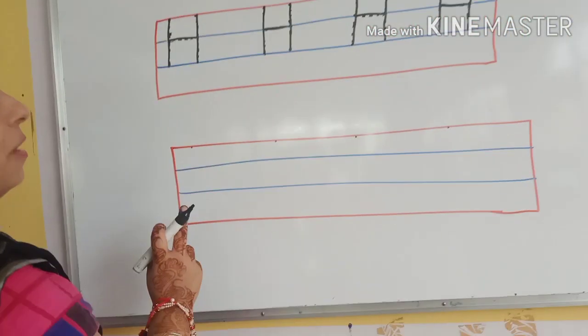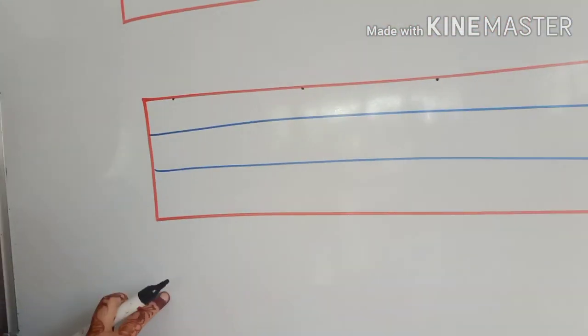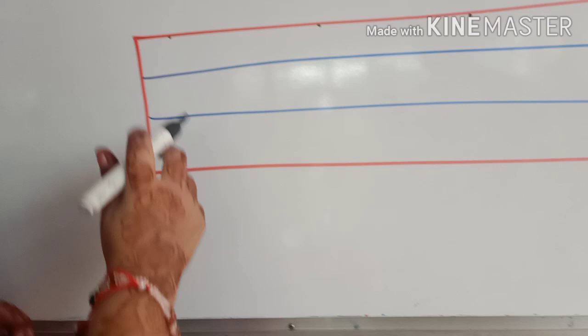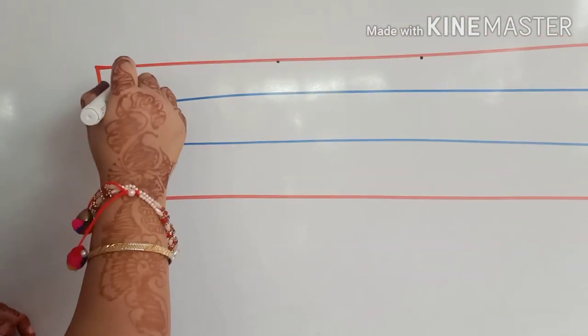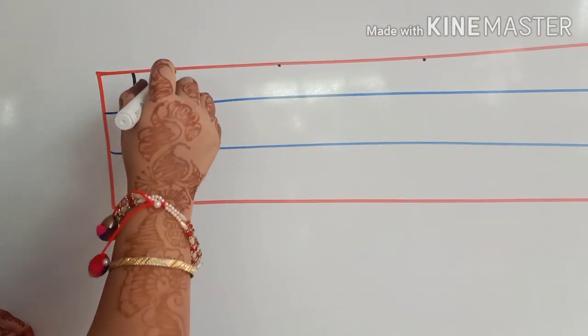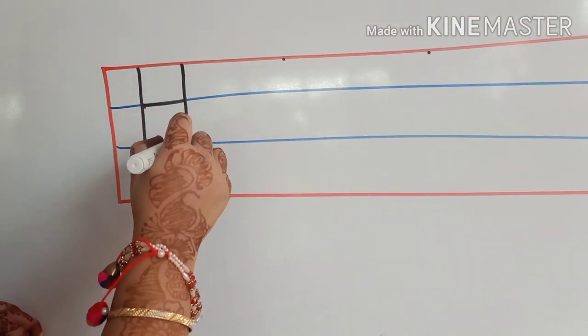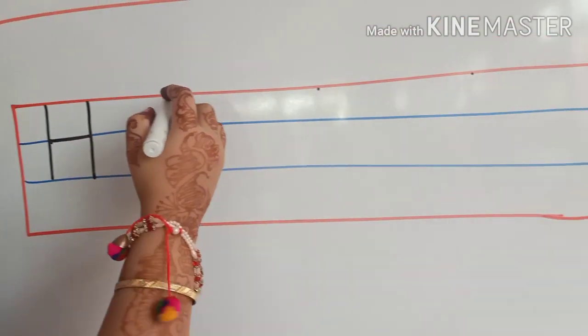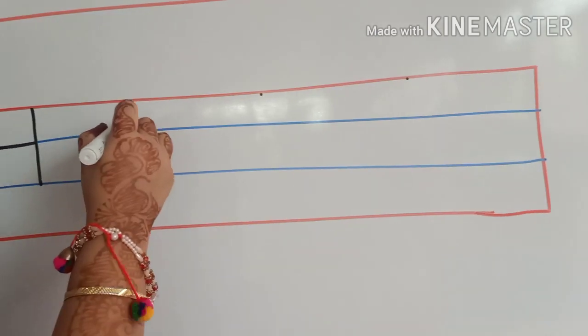Here we will make H. Standing line, sleeping line, standing line. H for house.